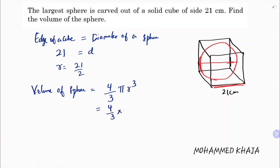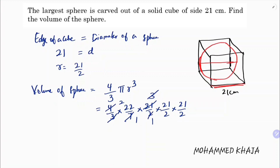So 4 by 3 times 22 by 7 into radius 21 by 2, cubed. Now 7 and 3 cancel, then 2 and 2 cancel, then another 2 and 2 cancel. You are left with 11 into 21 into 21.